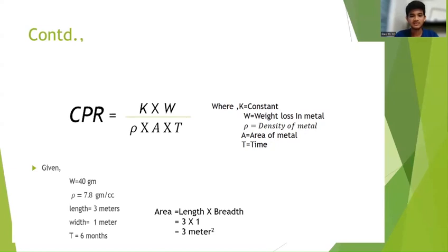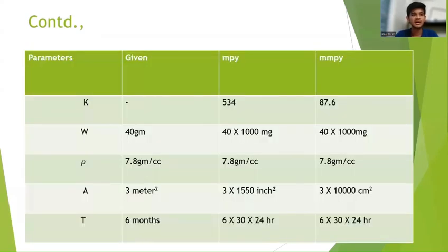Now let us find out the area. Area = length × breadth = 3 m × 1 m = 3 meters squared. Write down the tabular column and enter the parameters in the first column, the given data in the second column, the data converted into MPY form in the third column, and the data converted into MMPY form in the fourth column.